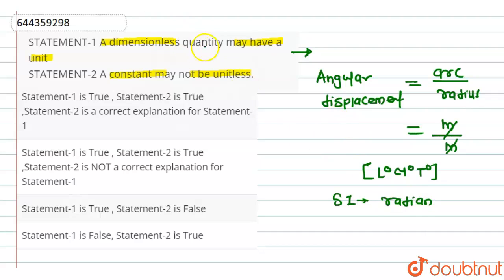It means a dimensionless quantity may have a unit. This statement is true. Now, in the second statement, it is stated that a constant may not be unitless.